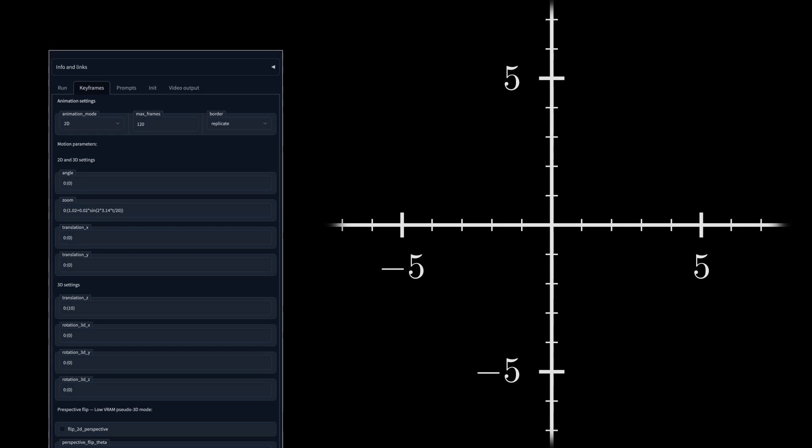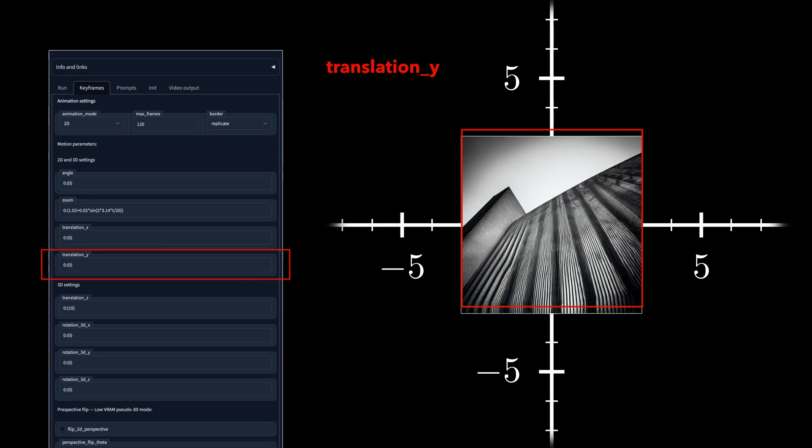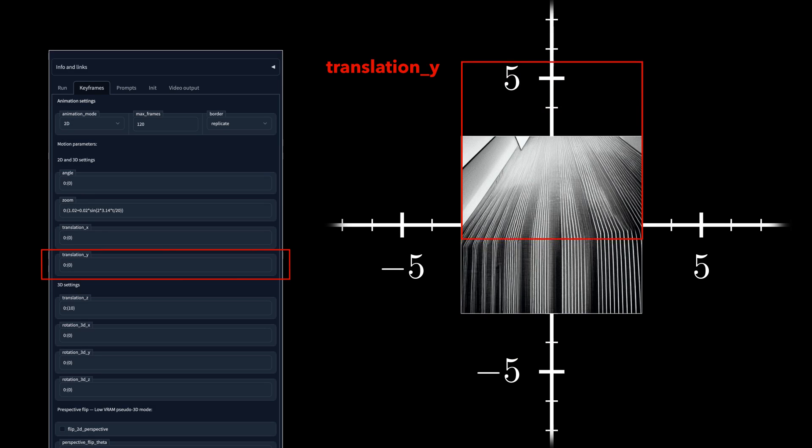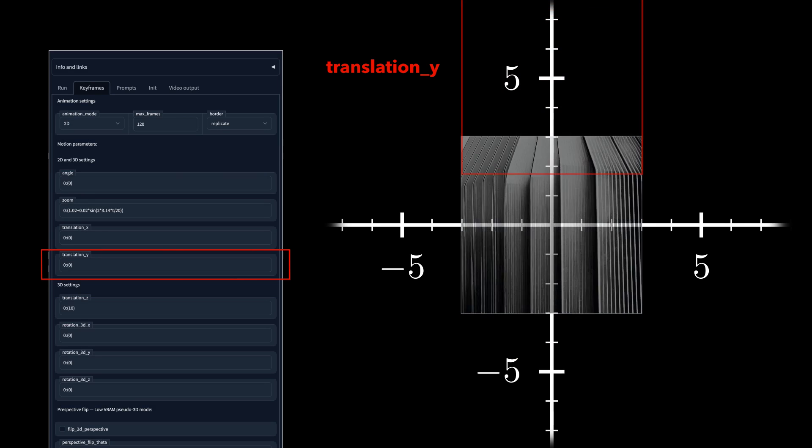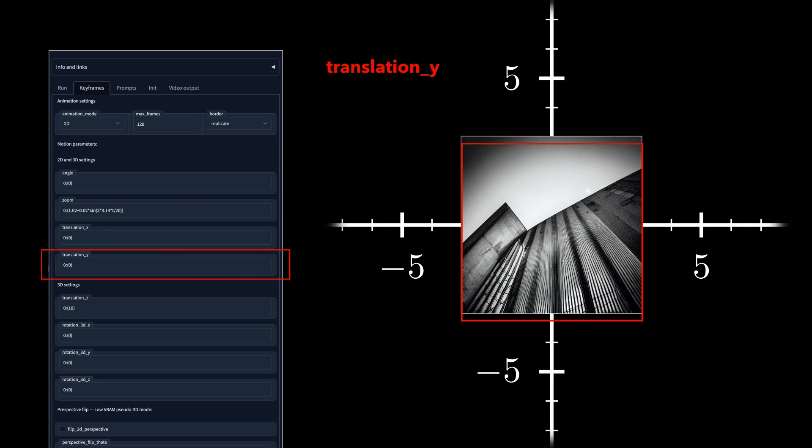Same goes for the Translation Y parameter. A negative value will move the canvas up. And a positive value down on the Y-axis.